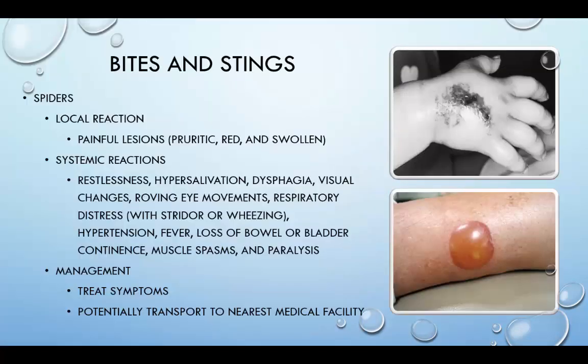A typical spider bite results in a local reaction with painful lesions that may be pruritic, red, and swollen. It can also result in a systemic reaction that includes restlessness, hypersalivation, dysphagia, visual changes, roving eye movements, respiratory distress with stridor or wheezing — stridor being a high-pitched wheeze — hypertension, fever, loss of bowel or bladder continence, muscle spasms, and even paralysis. The management for a spider bite is to treat the symptoms and potentially transport to the nearest medical facility.